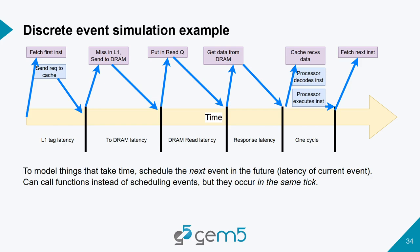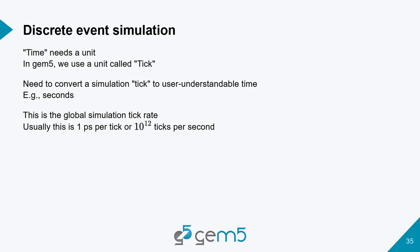Time in an event-driven simulator needs a unit. In GEM5 we call this ticks. The tick rate is a parameter — usually one picosecond. So at a one-gigahertz clock rate, you enqueue something for the next cycle one nanosecond in the future, which is a thousand ticks. SimObjects can enqueue events onto this global event queue, and events can only schedule other events in the future.